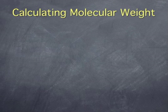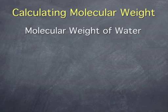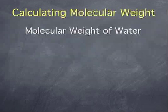We can calculate the molecular weight of a substance from its chemical formula and the periodic table. Say we want to calculate the molecular weight of water. The molecular weight is the sum of the atomic weights of atoms in the molecule.